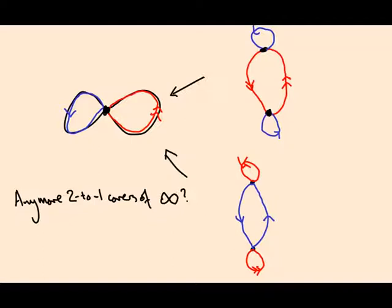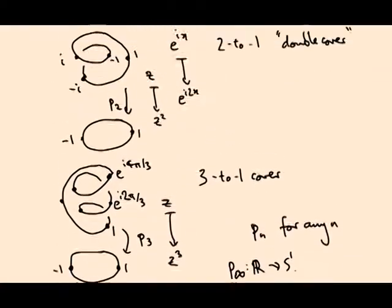In the next video we will see some more theory about covering spaces. We will define path lifting, monodromy, and we'll eventually get to the point where we can prove that the fundamental group of the circle is Z.